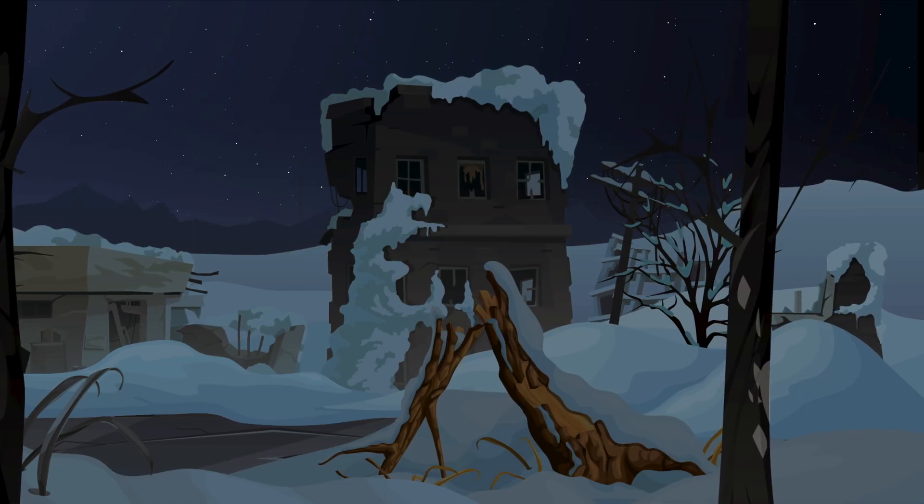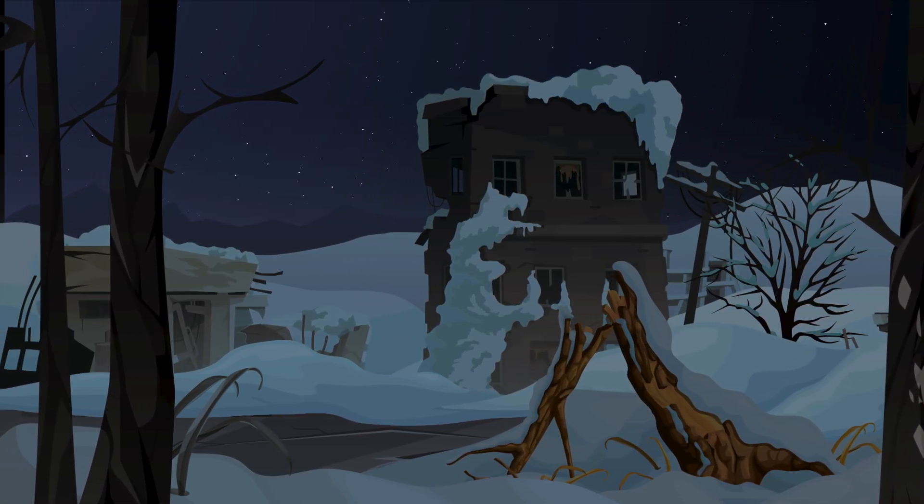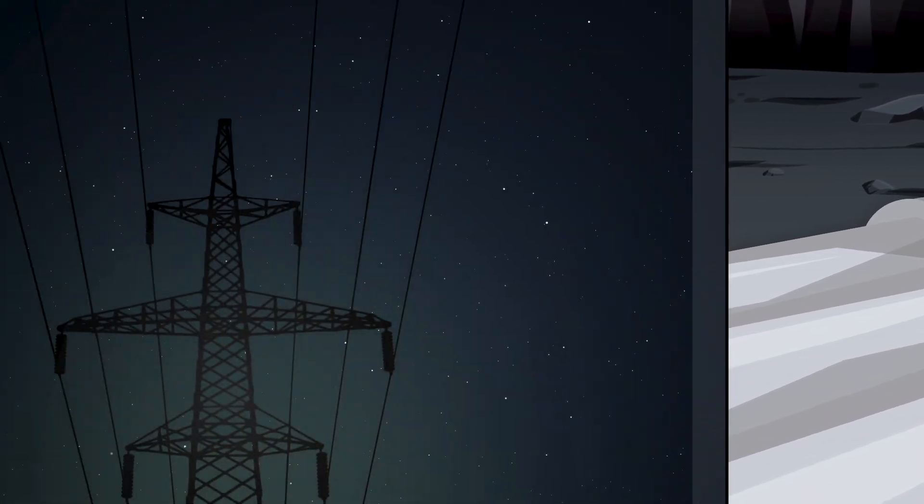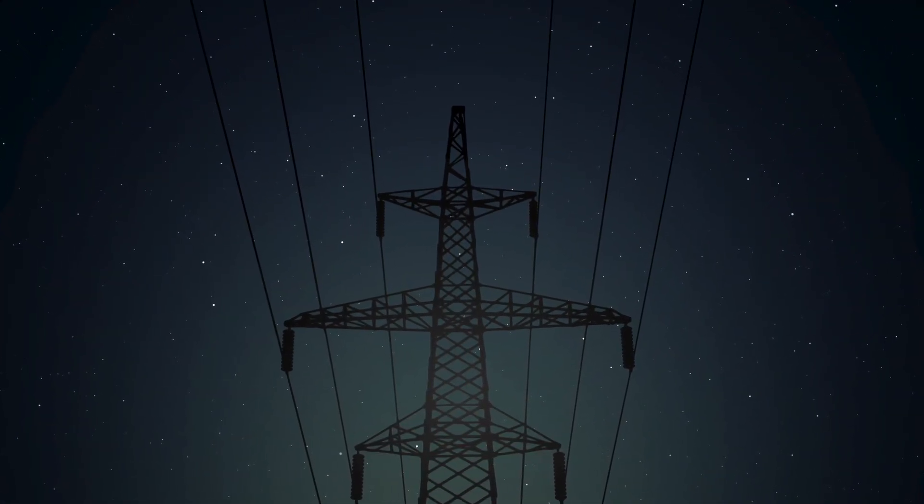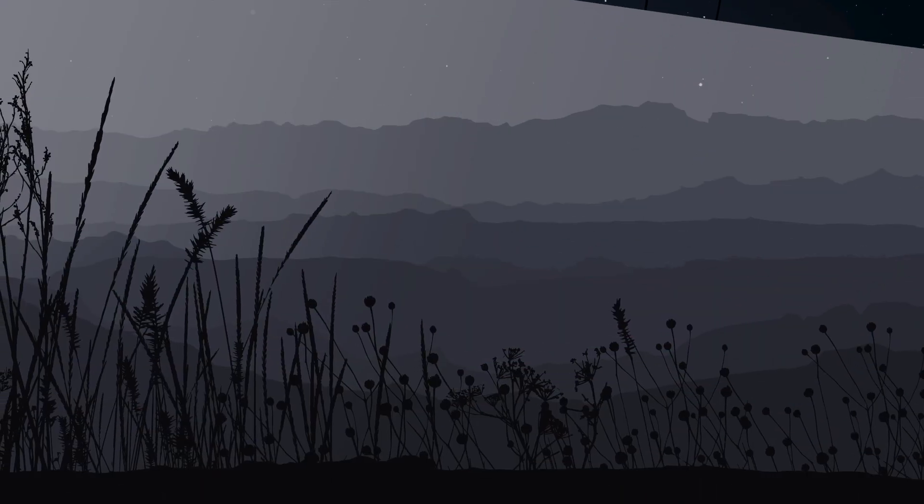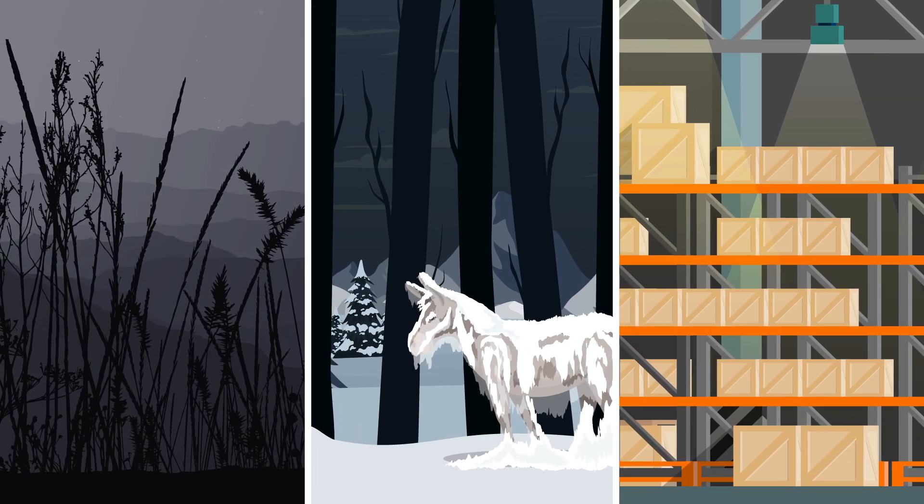As temperatures tumble, essential pieces of infrastructure would collapse, especially in areas unprepared for ice and snow. Pipelines would freeze and burst. Power grids would fail, leading to widespread blackouts and causing many to die in their homes. Food would become scarce, as crops die, animals freeze, and global supply chains fall to pieces.